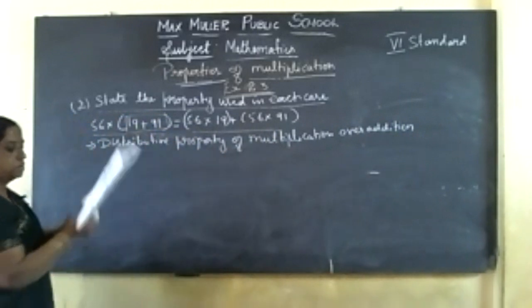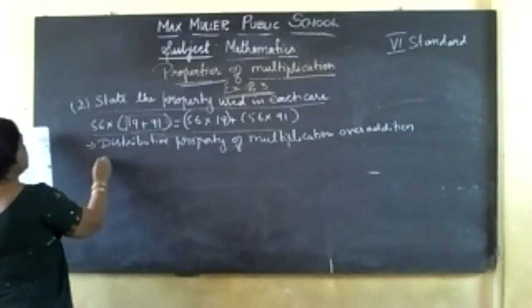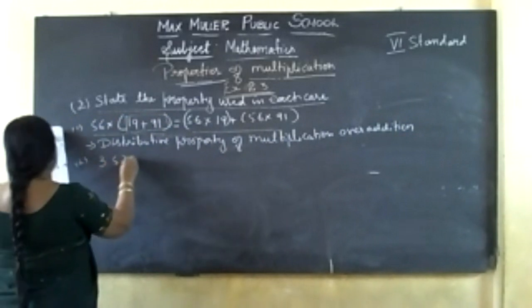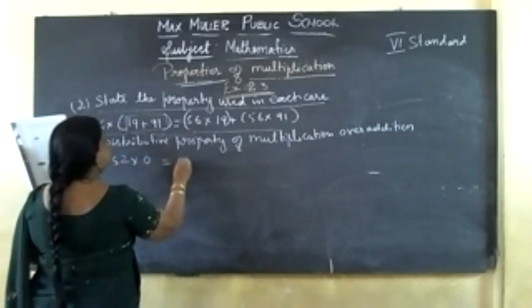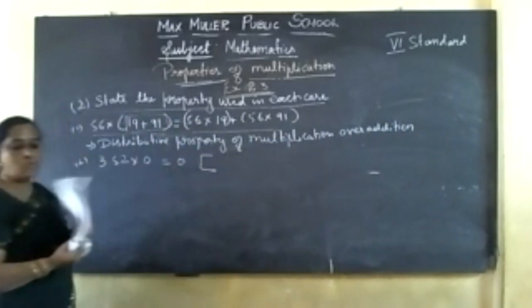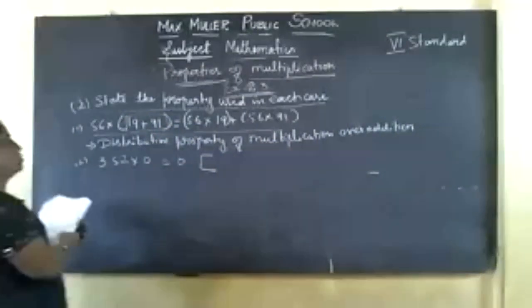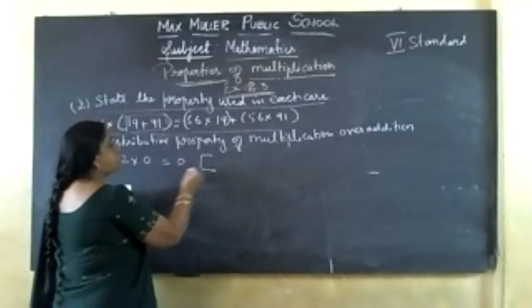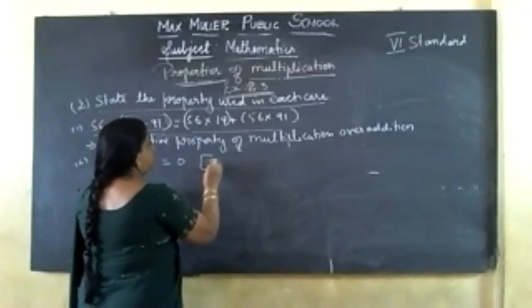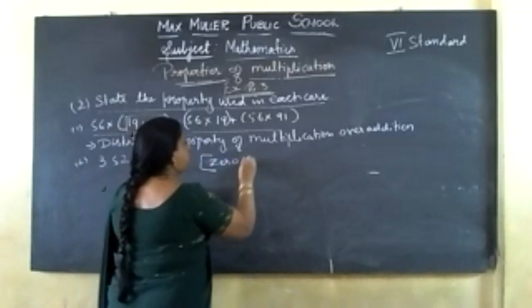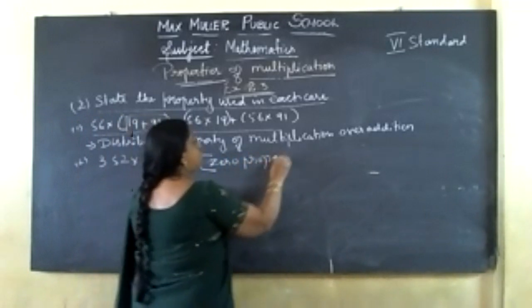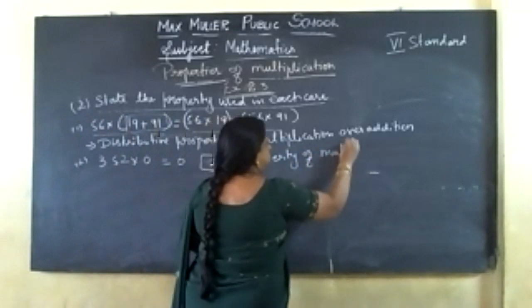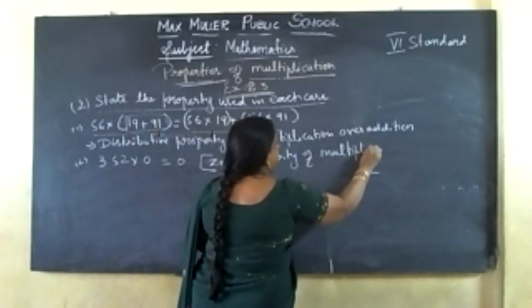Next: 352 into 0 is equal to 0. If you multiply any number by 0, you get 0. This is which property? Zero property of multiplication.